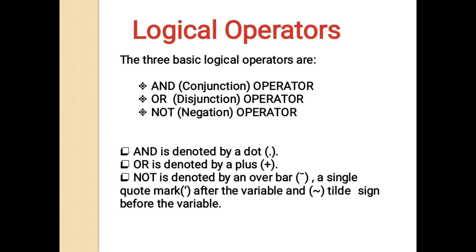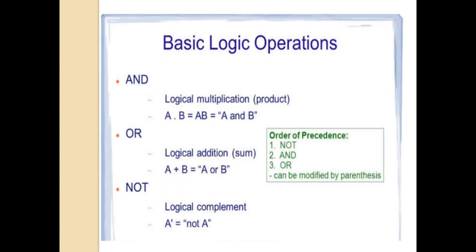The next topic is logical operators. There are three basic logical operators: AND, OR, and NOT. AND is also known as the conjunction operator and is denoted by a dot. OR is also known as the disjunction operator and is denoted by a plus. NOT is also known as the negation operator and can be denoted by three symbols: a bar, a single quote mark, and a tilde sign.